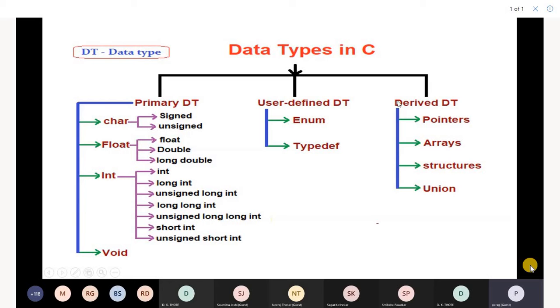Then derived data types. These data types are created from primary data types. You can create an integer pointer, character pointer, float pointer, or you can create a generic pointer, void star ptr. Arrays: you can create an integer array, floating point array, or a character array.